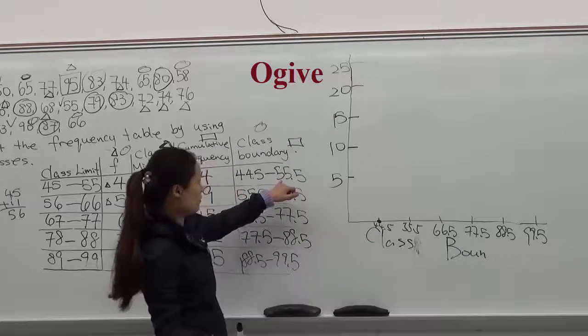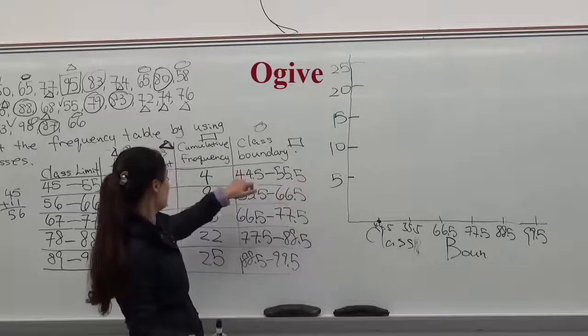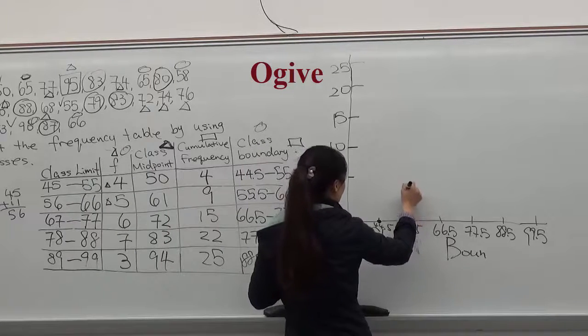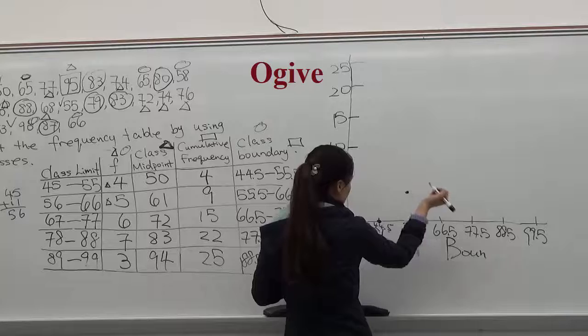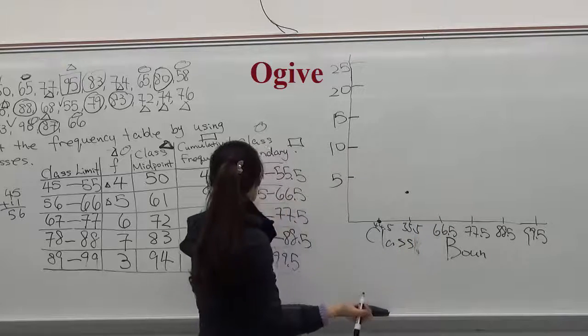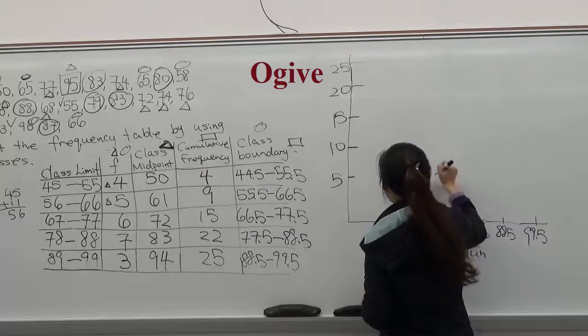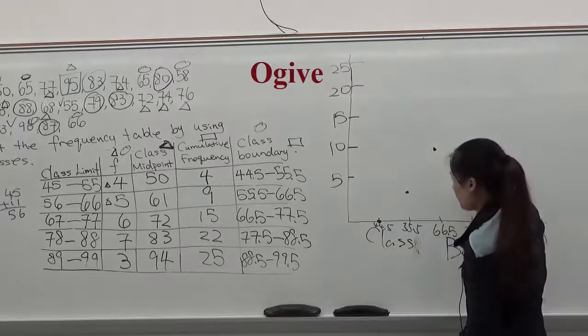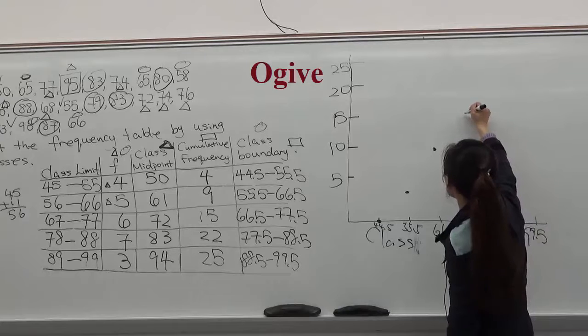Now we'll use 55.5. The cumulative frequency is 4. So 55.5 go up to 4. 66.5, that's 9. 77.5, the cumulative frequency is 15.